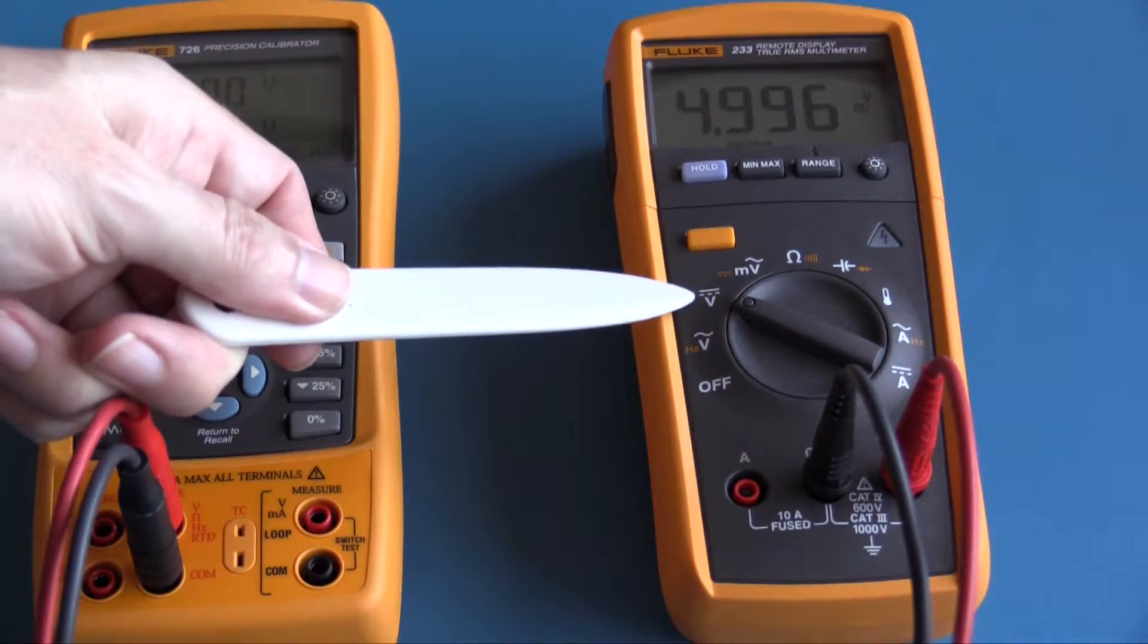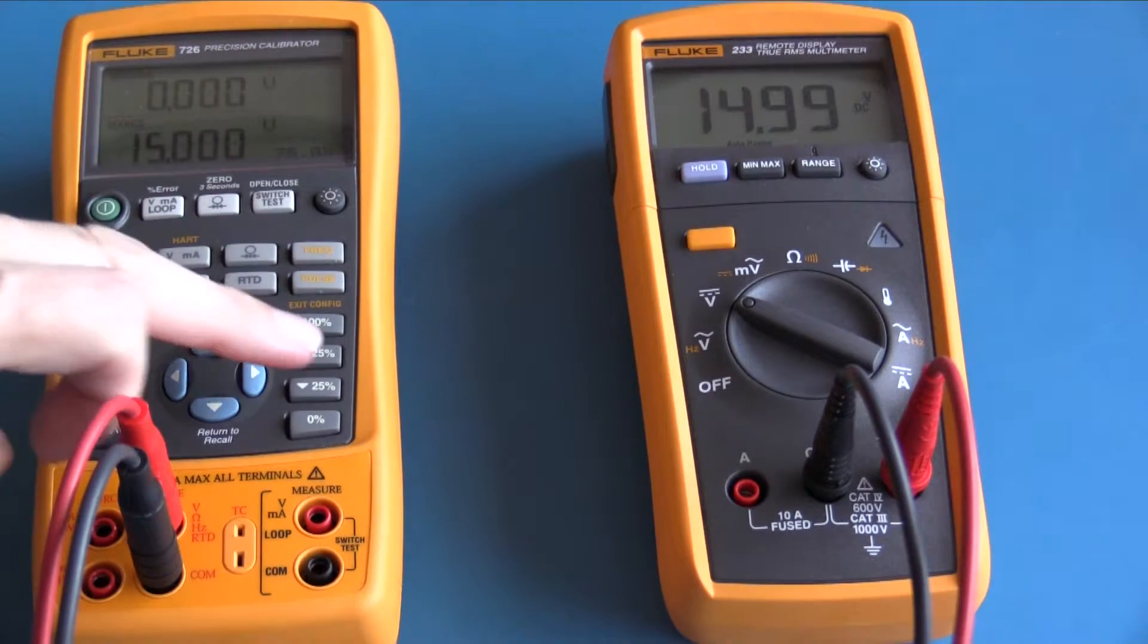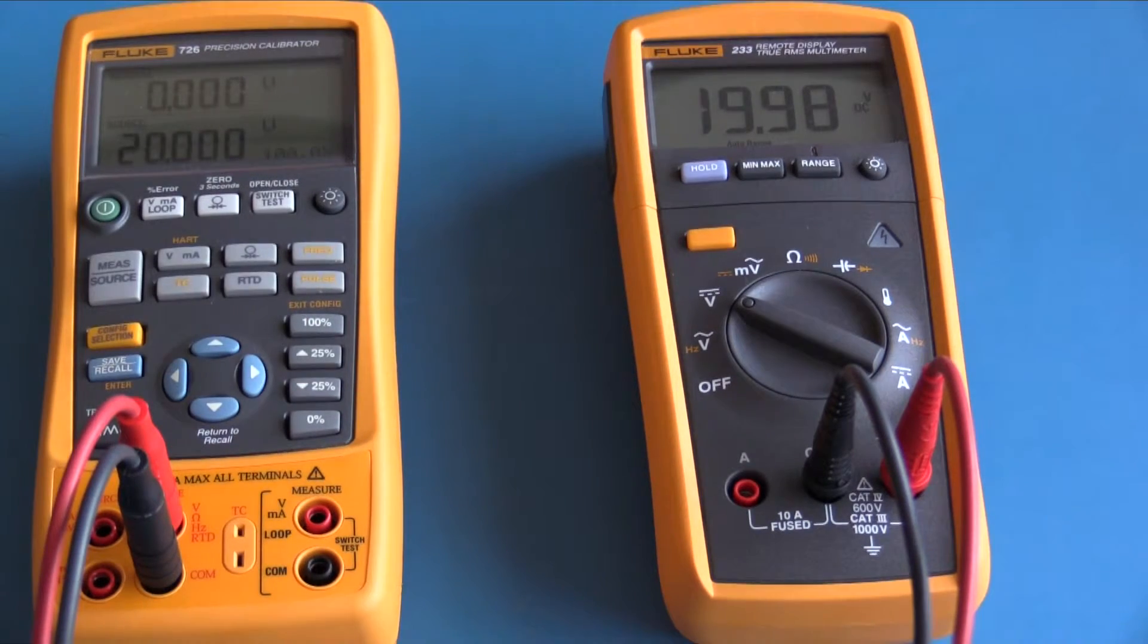I have now selected DC voltage and connected my test leads into my Fluke 726. I have the Fluke 726 set to source 5 volts. The Fluke 233 is showing 4.996 volts, so very close. Now looking at 10 volts, the Fluke is showing 9.99 volts, which is very close. 15 volts and 20 volts. The 233 is well within specification here.